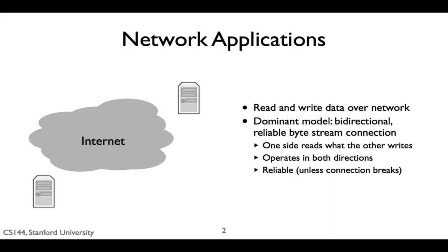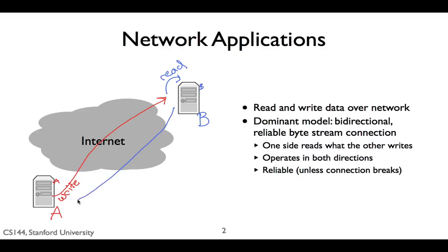So the basic model is that you have two computers, each running a program locally, and these two programs communicate over the network. The most common communication model used is a bi-directional, reliable stream of bytes. Program A, running on computer A, can write data which goes over the network such that program B, running on computer B, can read it. Similarly, program B can write data that program A can read. A reliable bi-directional byte stream is by far the most common communication model used in networks today.